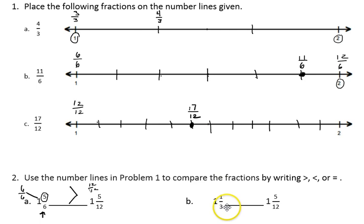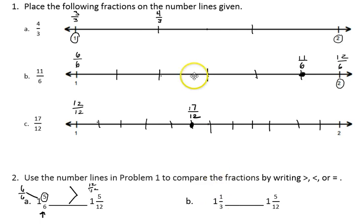If I look at 1 and 1 third, that's the same thing as 4 thirds. One whole is 3 thirds — add one more and I get 4 thirds, so that's this point on the number line. I'm comparing it to 1 and 5 twelfths, or 17 twelfths, which is this point on the number line. 1 and 1 third is less than 1 and 5 twelfths, because it's closer to 0 on the number line.